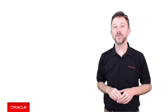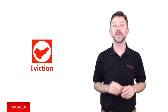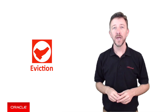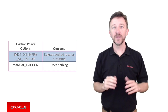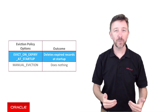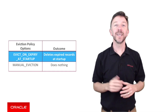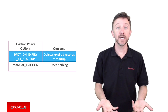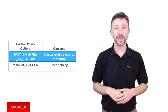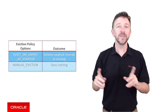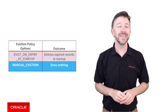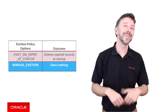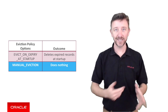The eviction policy deals with deleting data from the cache rather than just marking it stale. It has two options: evict on expiry at startup, which automatically evicts expired cache data when the app starts; and manual eviction, which does nothing automatically — the programmer must evict or delete data from the cache using the SDK.